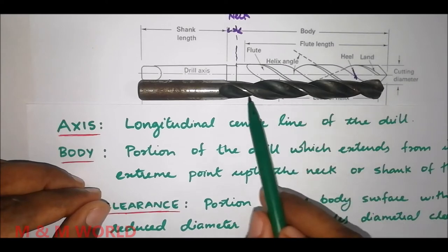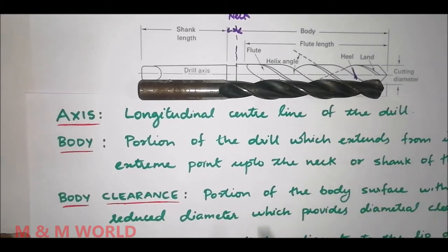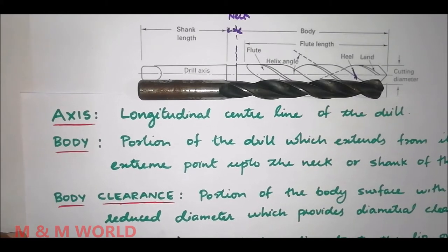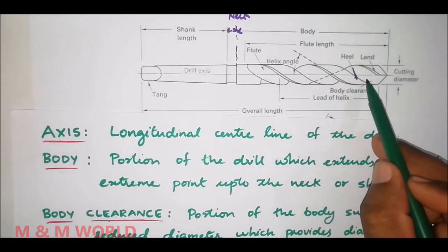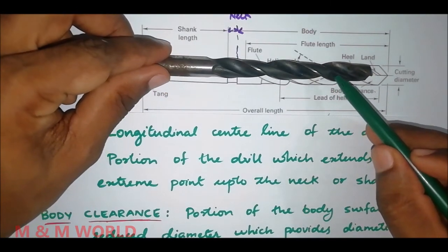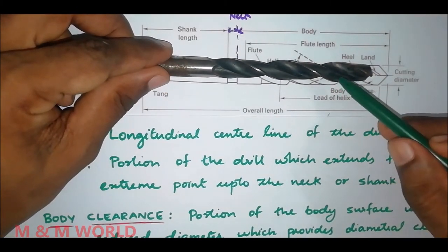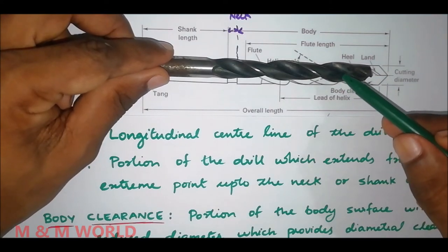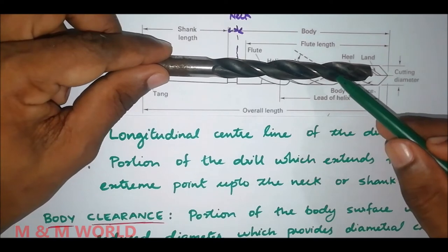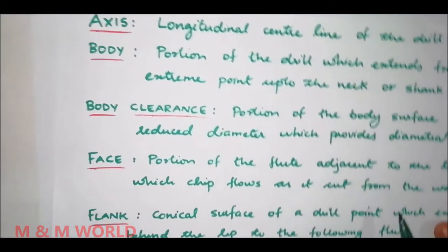Next is the body clearance. It is the portion of the body surface with reduced diameter which provides diametral clearance. Here we have reduced diameter, and this reduced diameter provides diametral clearance — this is the body clearance.